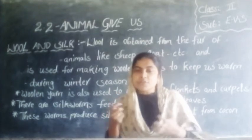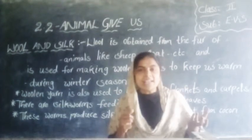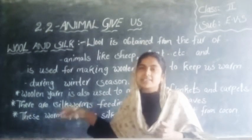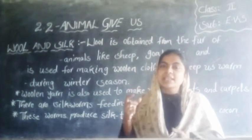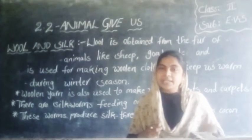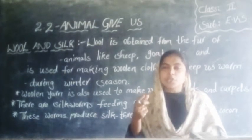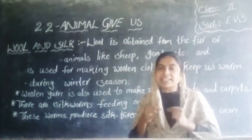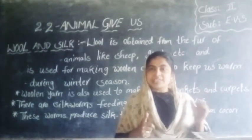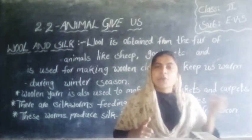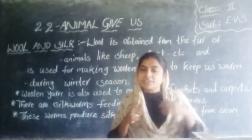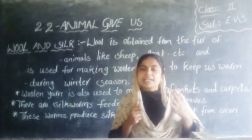Woolen yarn is also used to make woolen carpets. There are silk worms feeding on mulberry trees. These worms produce silk threads which we get from cocoons. These threads are dyed in different colors to make colored silk clothes.